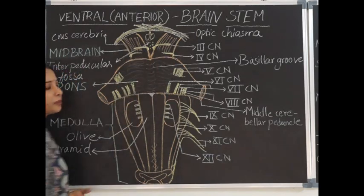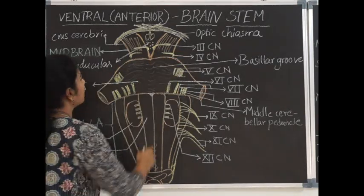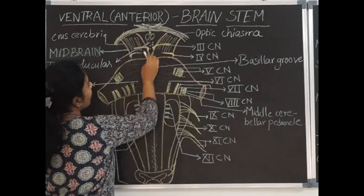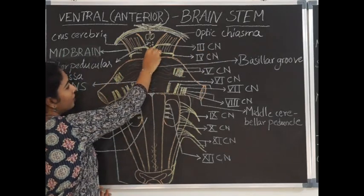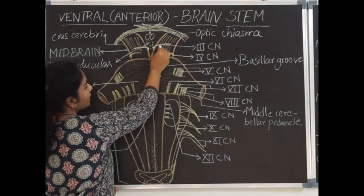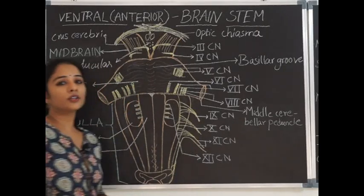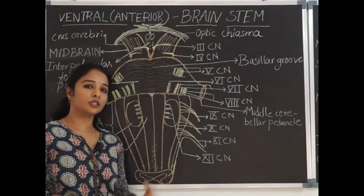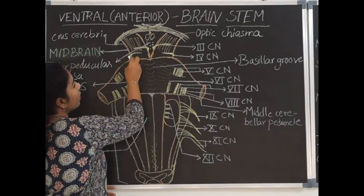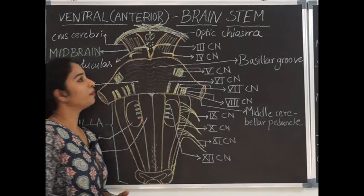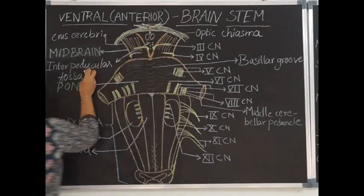The midbrain is a small wedge-shaped structure. The crus cerebri are the anterior features of the midbrain, and two cranial nerves get their origin from it. The 3rd cranial nerve, the oculomotor nerve, gets origin on the medial side of the crus cerebri and runs laterally. The trochlear nerve has a unique feature — it is the only nerve getting origin from the dorsal aspect of the brainstem. After originating, it curls round the crus cerebri and comes to the ventral side. The gap between the two crura cerebri is called the interpeduncular fossa.